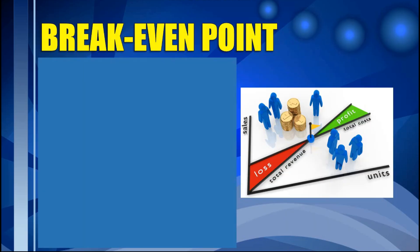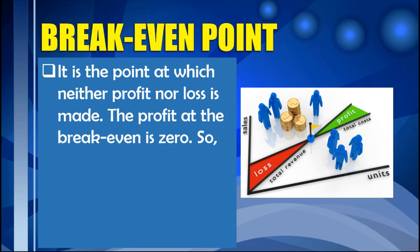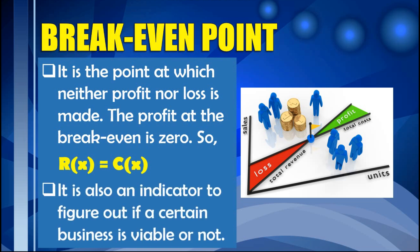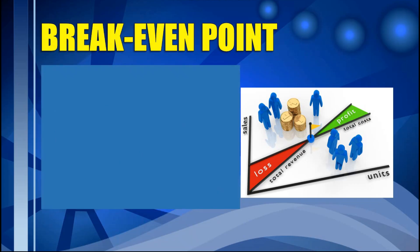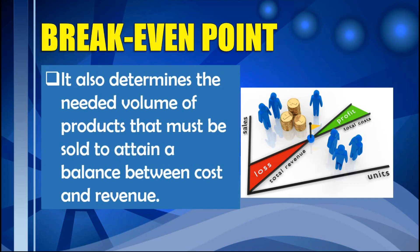So what is a break-even point? It is a point at which neither profit nor loss is made. The profit at a break-even is zero, so R(x) is equal to C(x). Break-even point is also an indicator to figure out if a certain business is viable or not — meaning, is the business achievable. It is also a way to determine the needed volume of products that must be sold to attain a balance between cost and revenue.